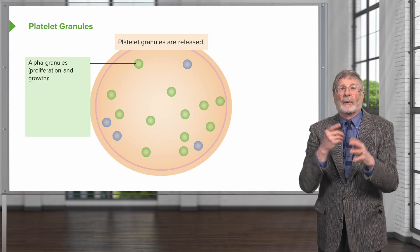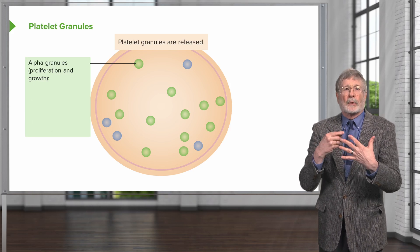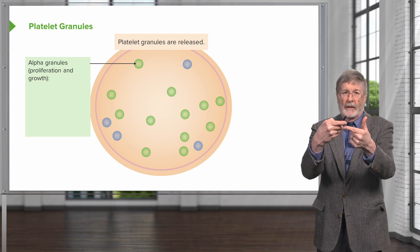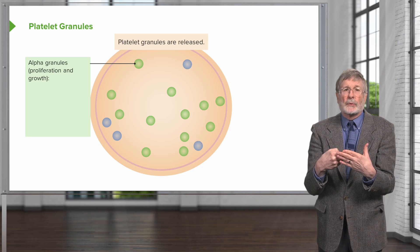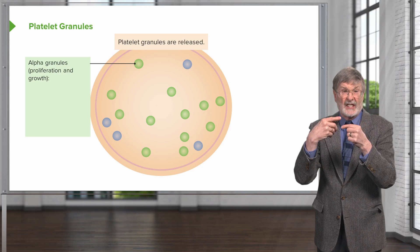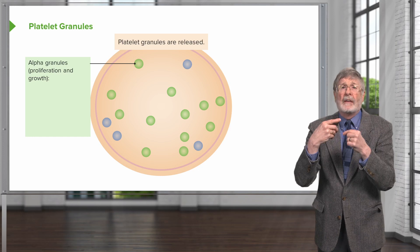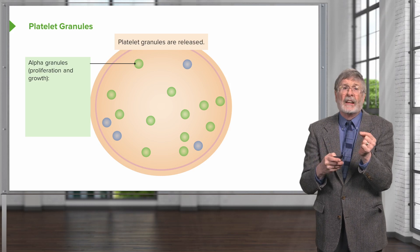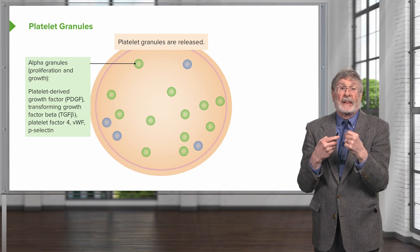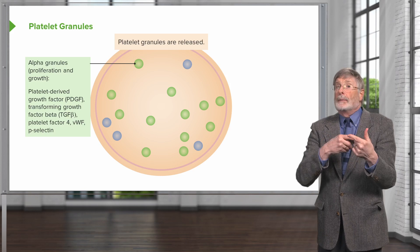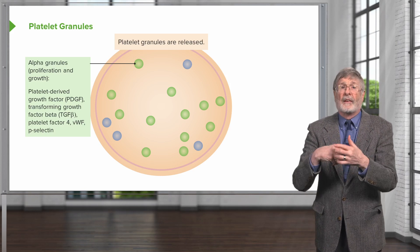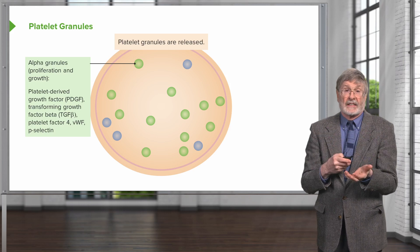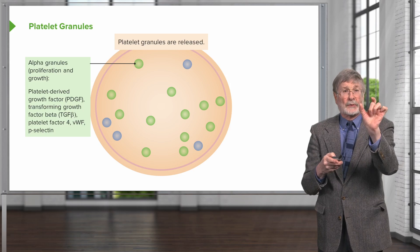The green granules are now called alpha granules, and they're responsible for proliferation and growth. If there's been injury, we need to induce vascularization, angiogenesis, and perhaps drive epithelial proliferation. The alpha granules contain platelet-derived growth factor, transforming growth factor beta, platelet factor 4, von Willebrand factor, and P-selectin — all involved in the early healing and regeneration process.